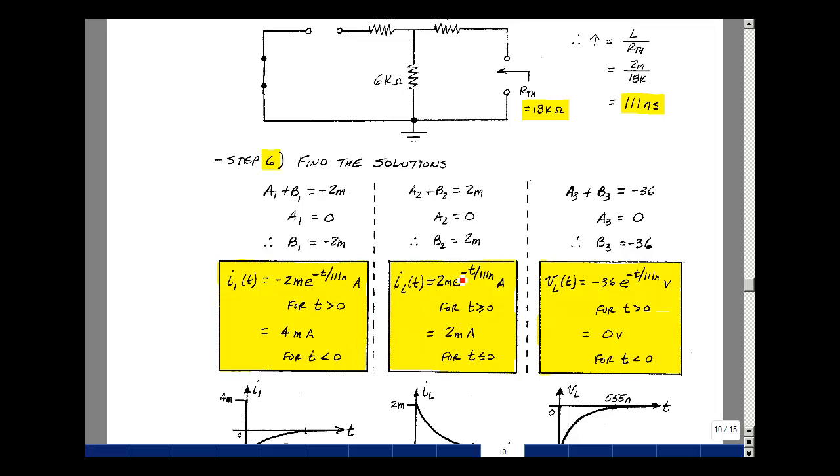Current in the inductor, A plus B was equal to 2 milli, but A2 was equal to 0, so B2 is equal to 2 milli. I sub L is equal to 2 milli E to the minus T over tau for T greater than 0.